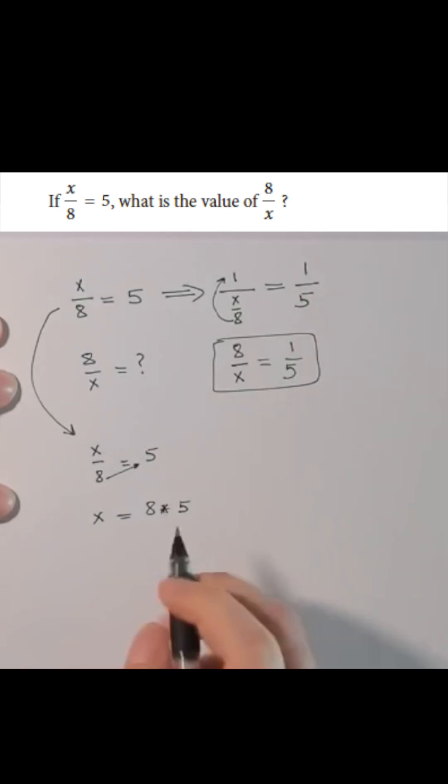Taking x to the other side as if we're dividing by x, 1 is equal to 8 multiplied by 5 divided by x. We divide both sides by 5 and 5 will cross out here. Therefore 8 over x is equal to 1 over 5.